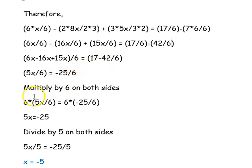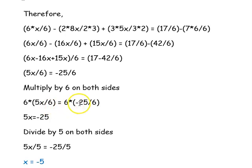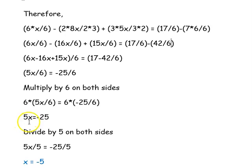We multiply by 6 on both sides. The equation becomes 6 times 5x divided by 6 equal to 6 times minus 25 divided by 6. The 6 in the numerator and denominator cancels on both sides, so the equation reduces to 5x equal to minus 25.